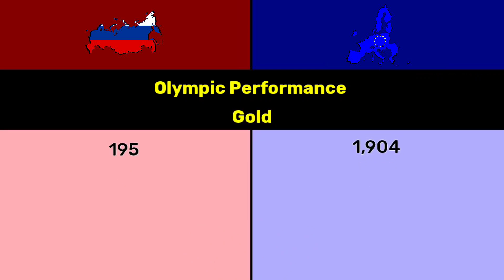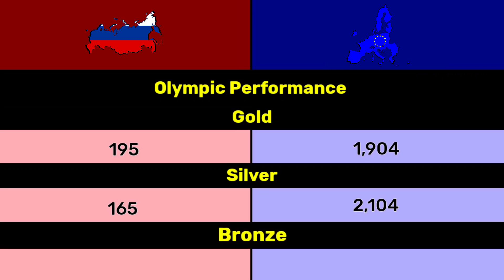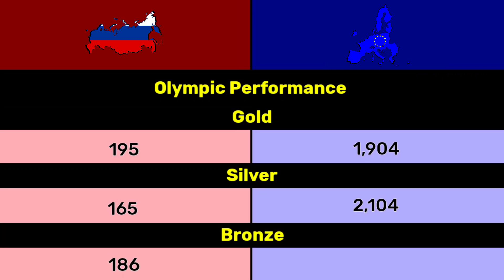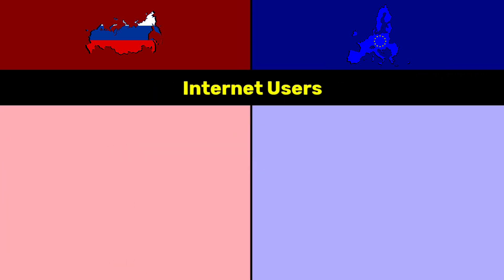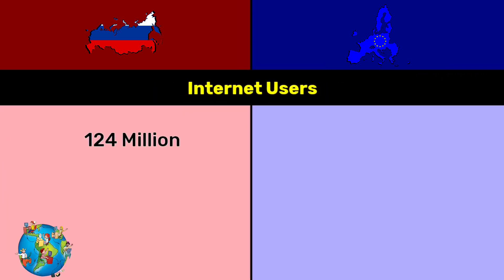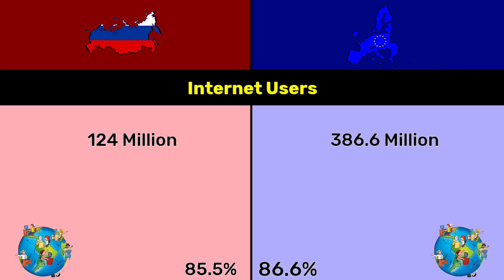Olympic performance — total Olympic medals: Russia 546, EU 6,313. Gold: Russia 195, EU 1,904. Silver: Russia 165, EU 2,105. Bronze: Russia 186, EU 2,305. Internet users: Russia 124 million, covering 85.5% of Russia's population; EU 316.6 million.